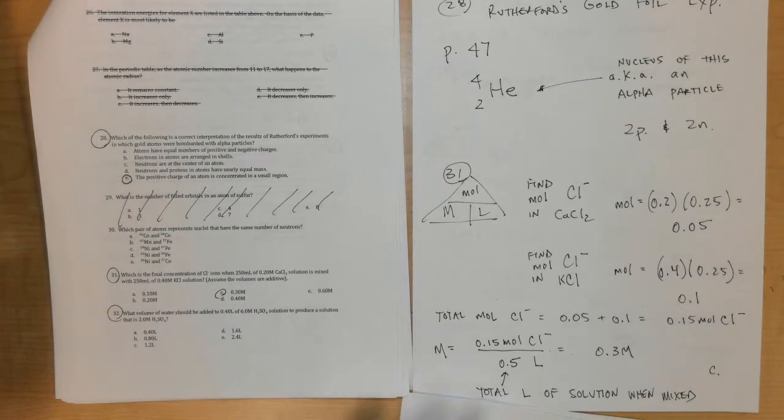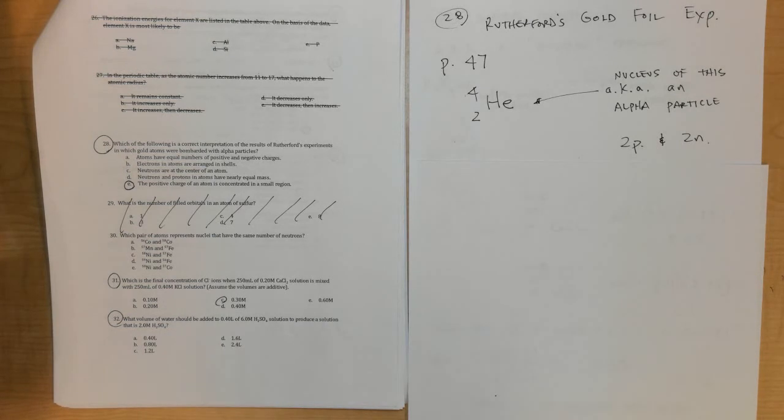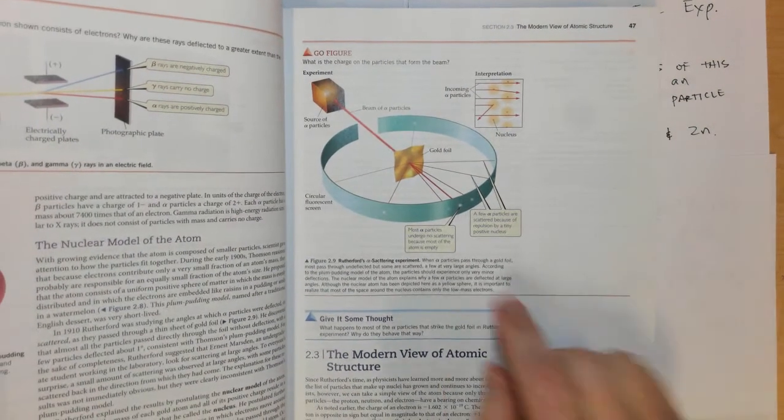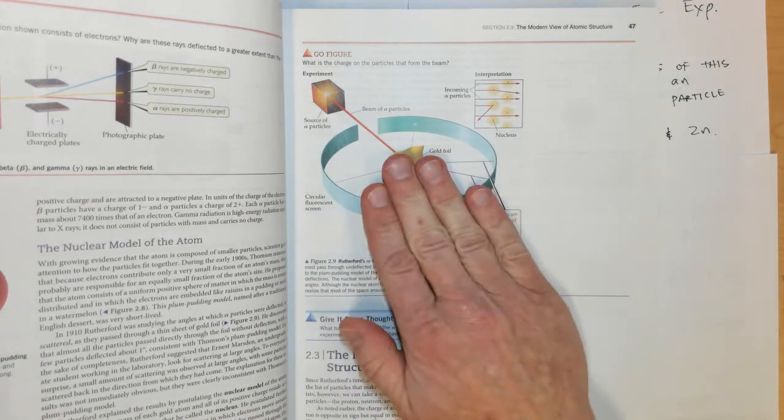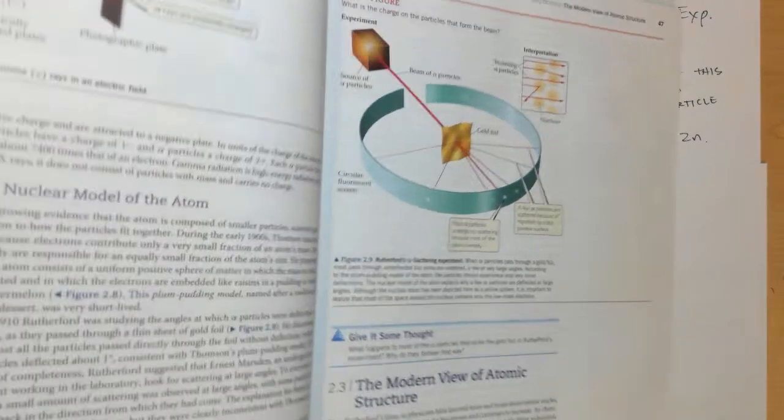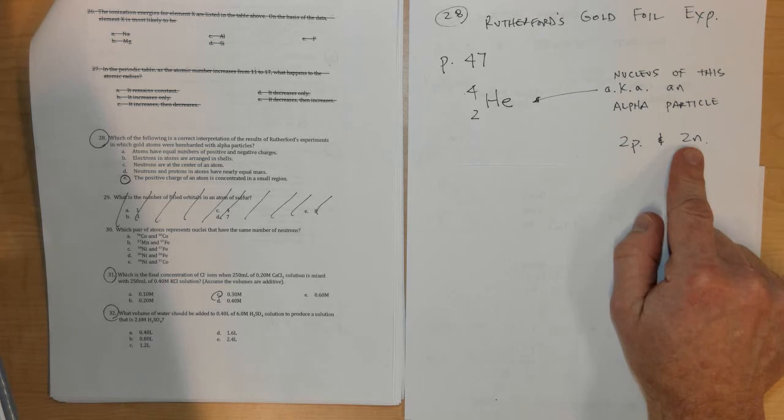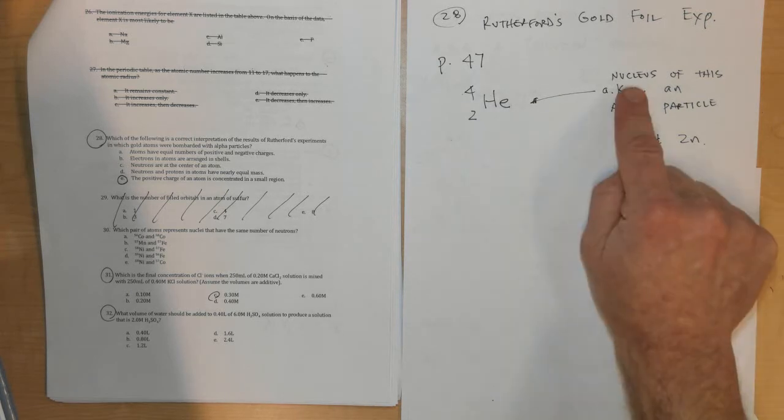Next problem, number 28: Rutherford's gold foil experiment in which gold atoms were bombarded with alpha particles. On page 47 of this edition of the textbook they have a really nice picture of the gold foil experiment. In the gold foil experiment, a source of alpha particles was beamed at a sheet of gold foil - gold foil is like aluminum foil but it's made out of gold. An alpha particle is two protons and two neutrons.